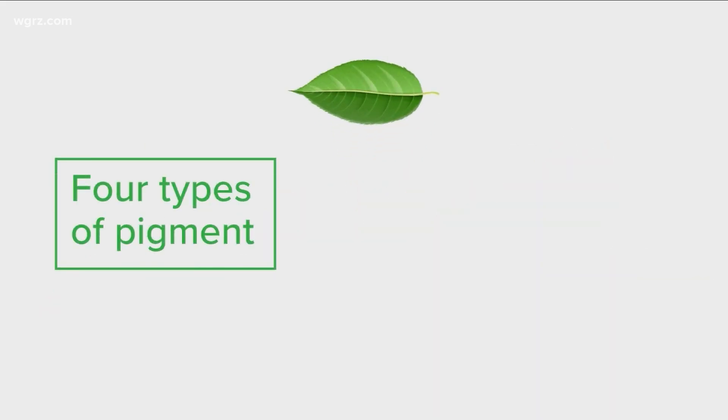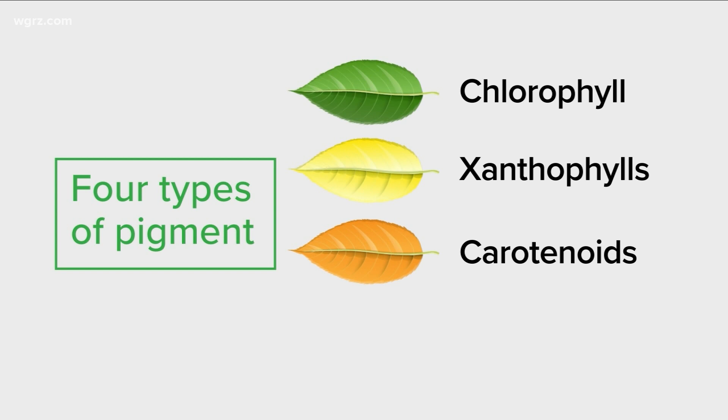There are four types of pigment in each leaf. Chlorophyll, which is green, xanthophylls, which is yellow, carotenoids, which is orange, and anthocyanins, which is red.